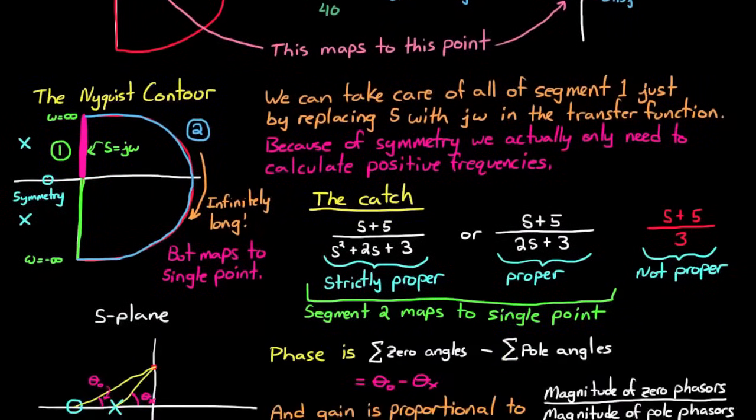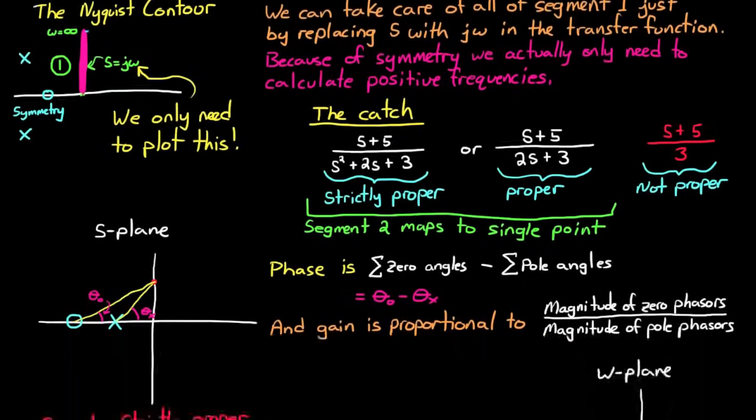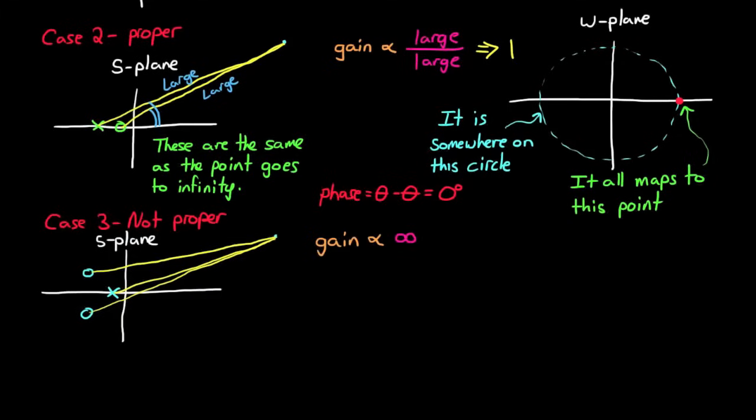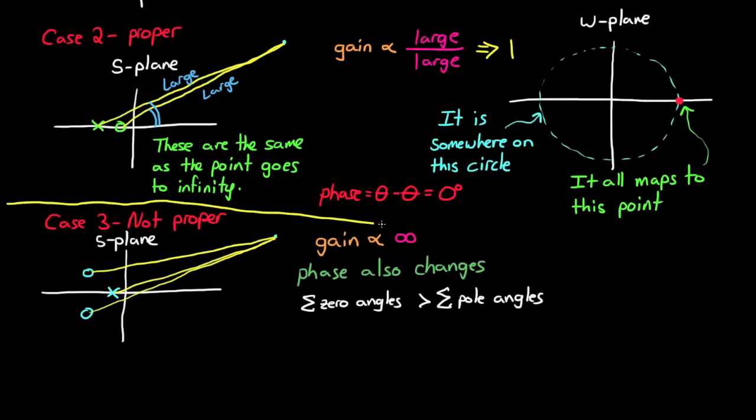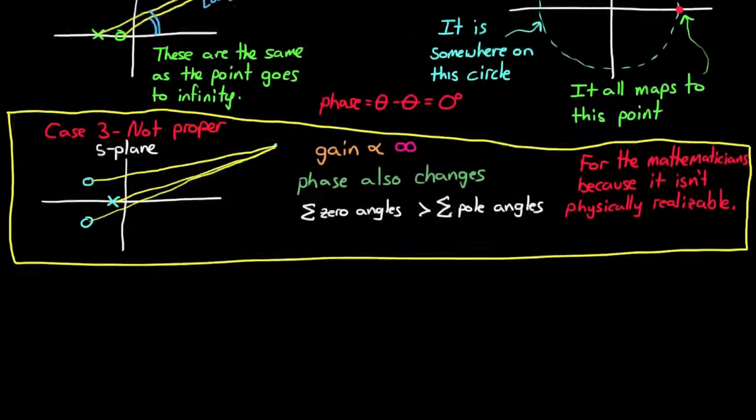Now to simplify the Nyquist contour. Since the second segment of the Nyquist contour all maps to the same point in the w domain, we don't need to worry about it when we're plotting. The point is taken care of with the positive infinity in the j omega axis. And because of the reflection, we don't need the negative omegas. So we really only need to plot the positive j omega part. Now at the risk of confusing you, I want to explain what happens if you don't have a proper transfer function. In this situation, on the infinity portion of the Nyquist contour, the gain also goes to infinity since you have more zeros than poles. And as you loop around that portion of the contour, the phase is also changing. So in this case, the portion of the Nyquist contour doesn't all map to a single point. However, this is really only a concern to mathematicians and not engineers, since engineers deal with physically realizable systems. But keep this in mind in case you come across a non-proper transfer function someday.